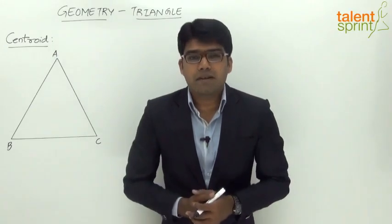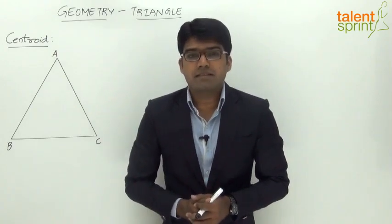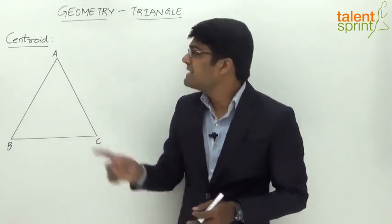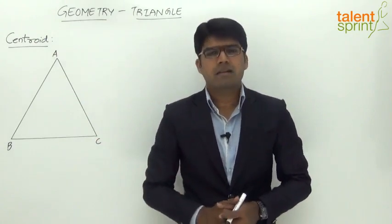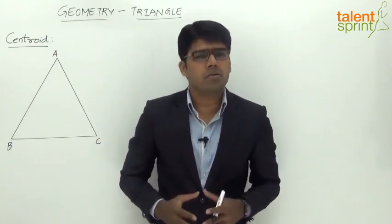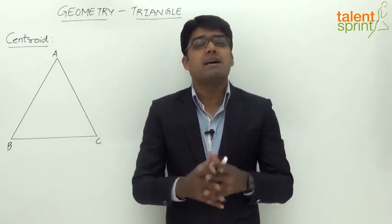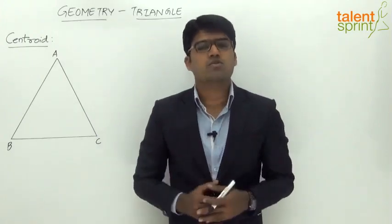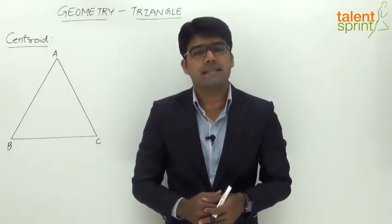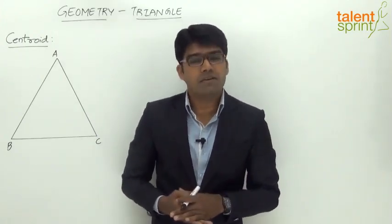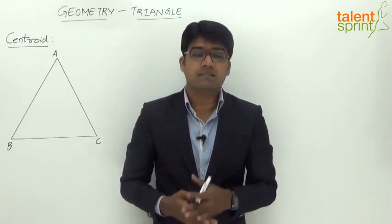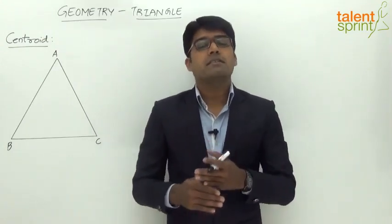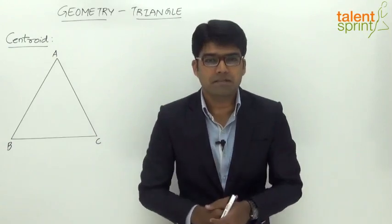Let us now learn about the different types of centers of a triangle. The first one we are going to look at is the centroid. Technically, centroid is the point where the entire mass of the triangle is concentrated, but in terms of geometry, centroid is the point of intersection of the three medians of a triangle, or the point where the three medians of the triangle meet.